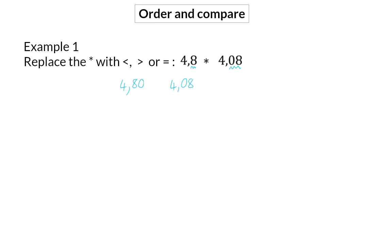Two decimals show us hundredths. So here we are comparing 4,80 hundredths with 4,08 hundredths. 4,80 is bigger than 4,08. Therefore, 4,8 will also be bigger than 4,08.